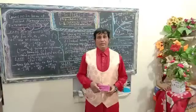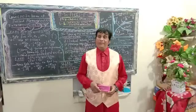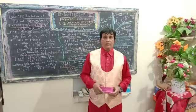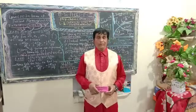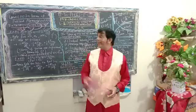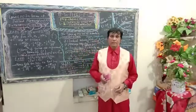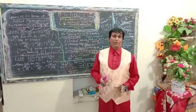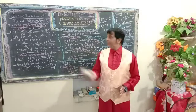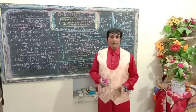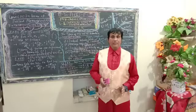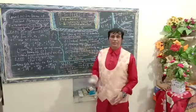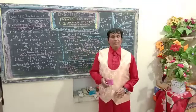Dear students of B.S.C. Part 1, a very good afternoon and welcome to today's lecture. I am going to deliver today a lecture on Types or Kinds of Velocity of Reactions, chosen from B.S.C. Part 1, Paper 3, Physical Chemistry, selected from Unit 5, titled Chemical Kinetics.